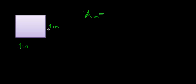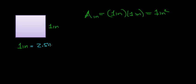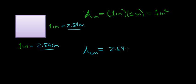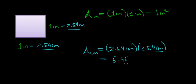Imagine you have a 1 inch by 1 inch square object. The area equals length times width, which is 1 inch times 1 inch, or 1 inch squared. Now, since 1 inch is exactly equal to 2.54 centimeters, both the length and the height of this square are also 2.54 centimeters each. So the area in centimeters is 2.54 centimeters times 2.54 centimeters, which works out to 6.45 centimeters squared.